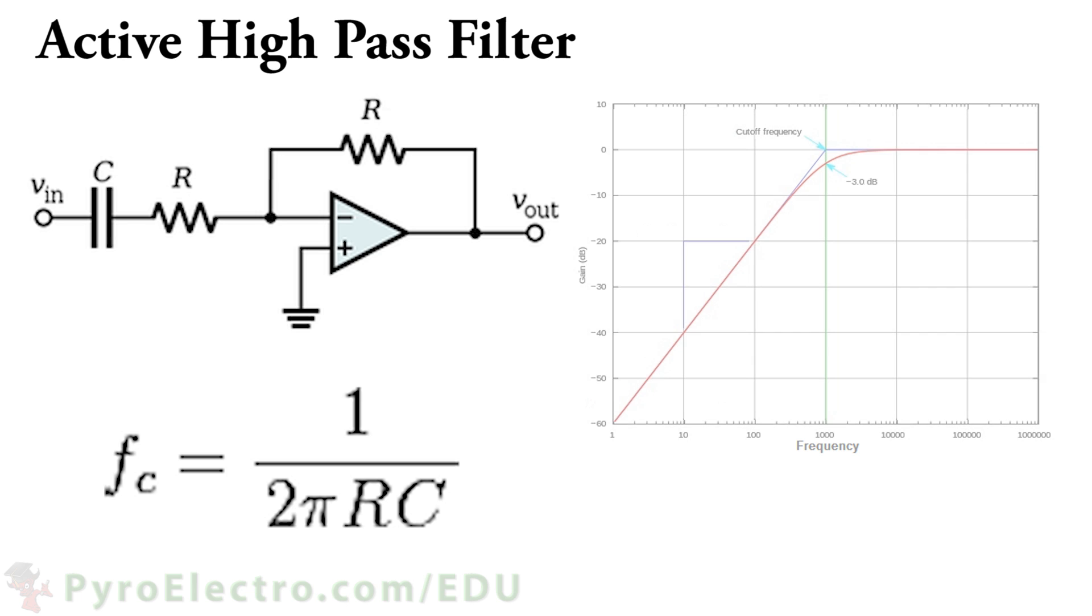Frequencies lower than the cutoff point will have very low power going through the filter, but all higher frequencies pass through unchanged.